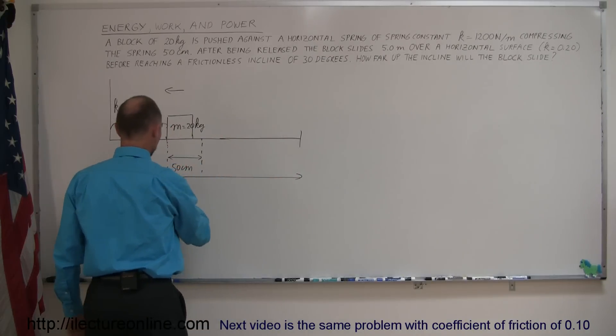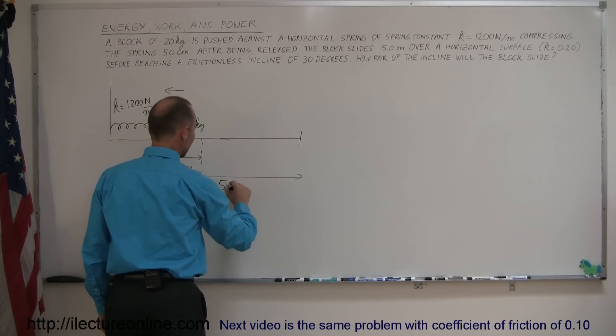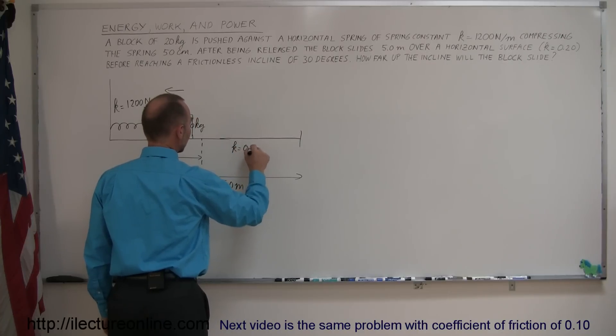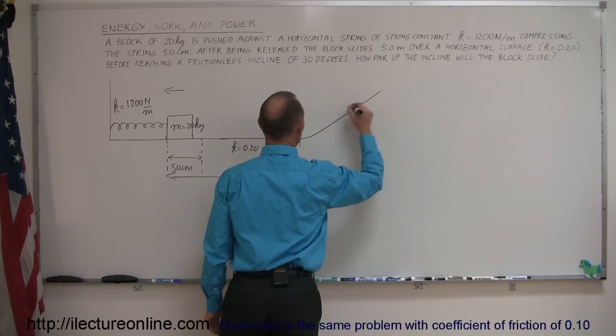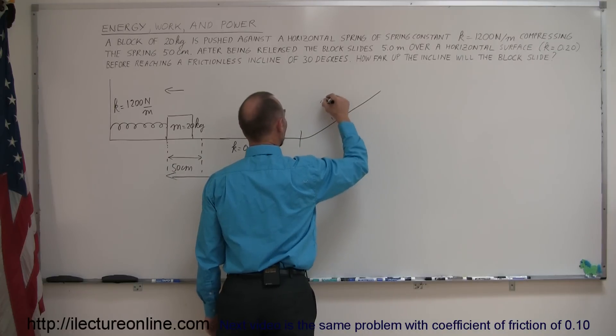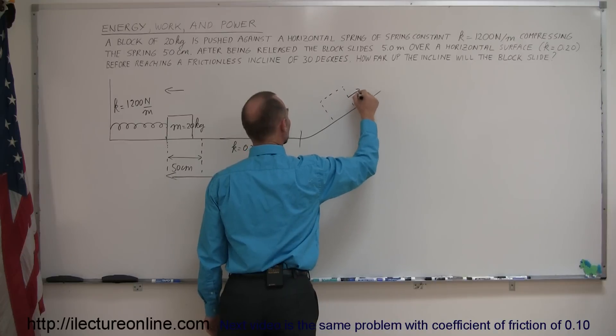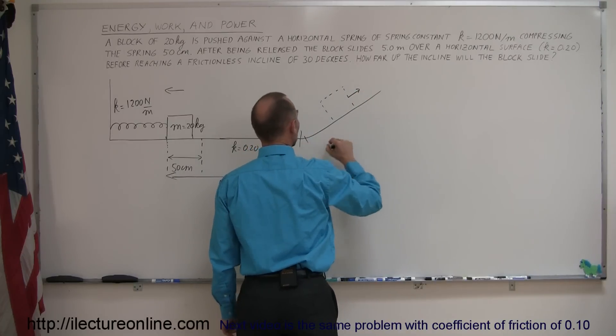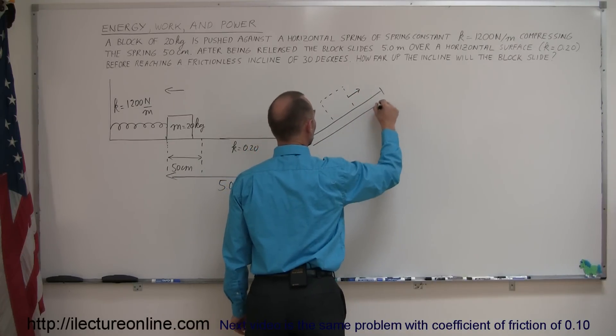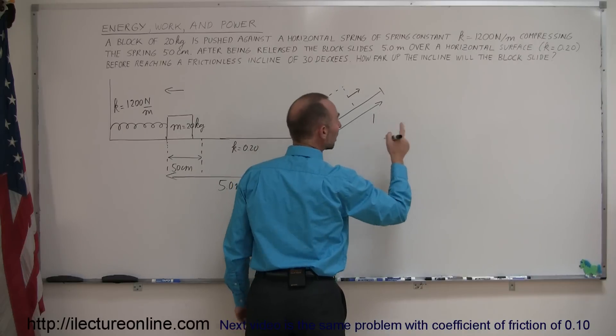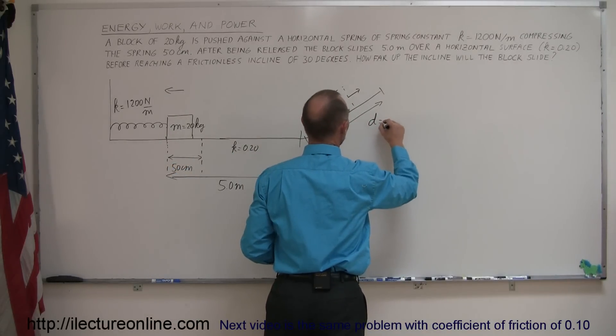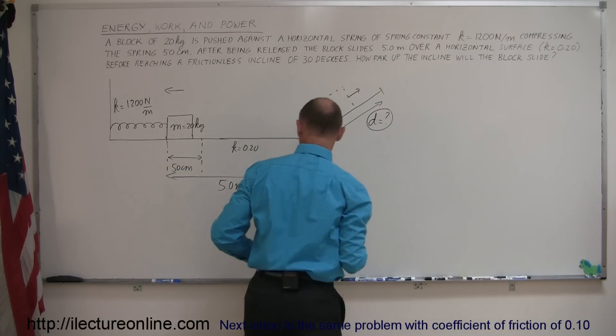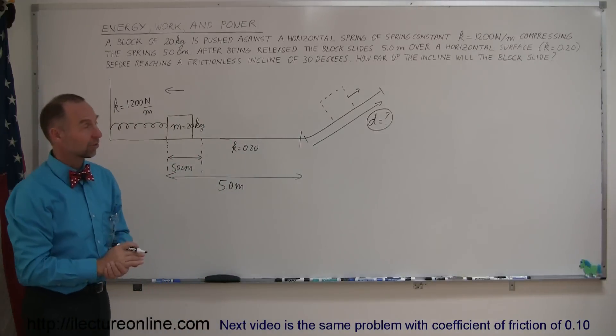So this distance here is 5 meters. The coefficient of friction is 0.20. And after that, the block begins to slide up the incline. So after some while, the block will be sliding up an incline. At some point, it will reach a certain distance d. So a small d. And we want to know how far it is. How far up the incline will the block slide?